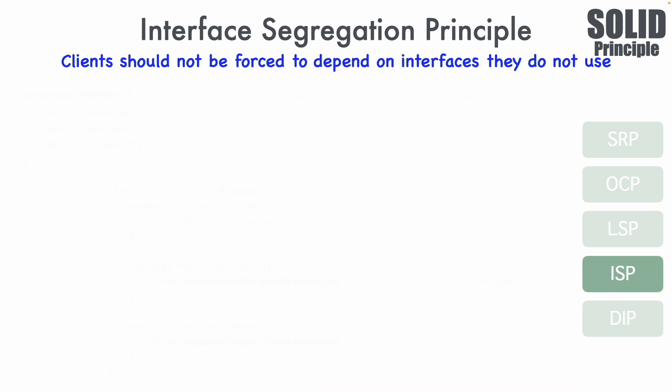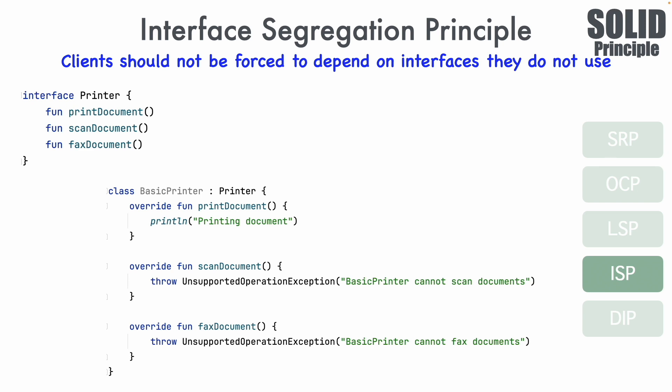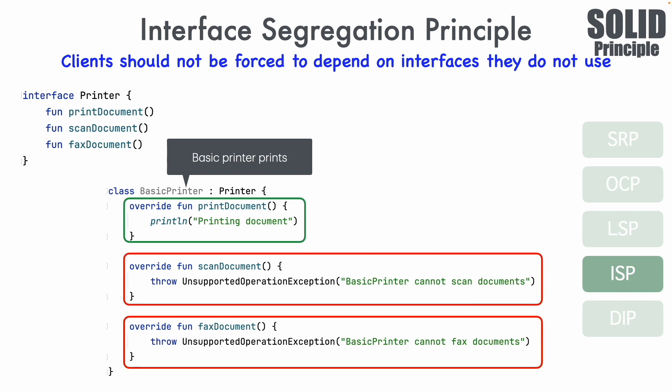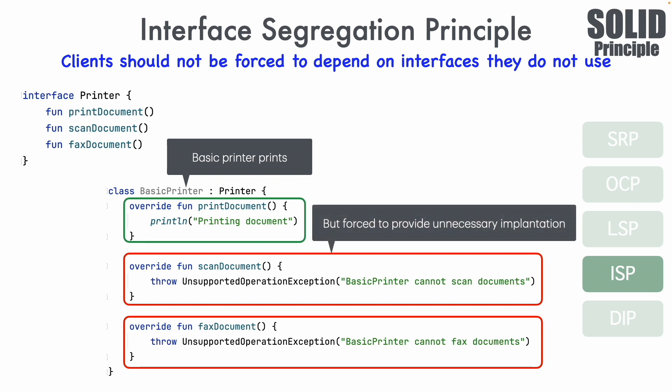Let's take an example of a Printer interface with three functions: printDocument, scanDocument, and faxDocument. A BasicPrinter implements this Printer interface. A basic printer can print a document — that's perfectly fine. But the basic printer doesn't scan or fax documents. Because it implements the Printer interface, it is forced to provide unnecessary implementations by throwing an UnsupportedOperationException. This is a clear violation of the Interface Segregation Principle, as the Printer interface is trying to do too many things, with a domino effect on implementing classes.